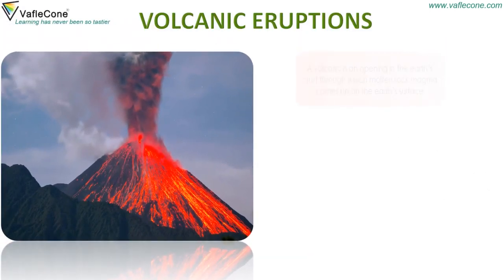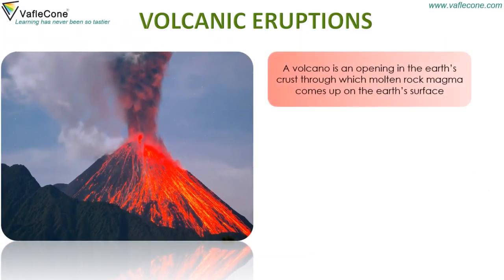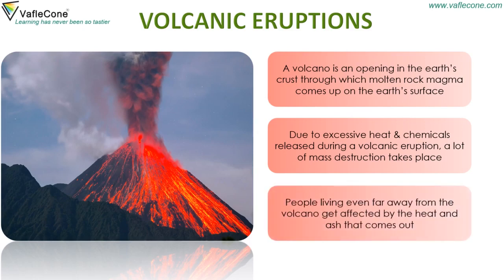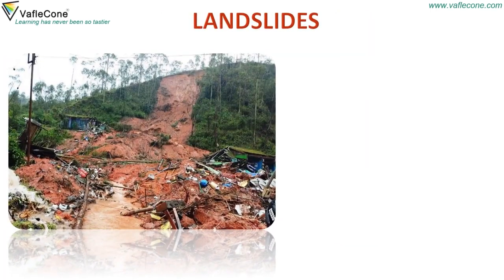Volcanic eruptions. A volcano is an opening of the earth's crust through which molten rock, magma, comes up on the earth's surface. Due to excessive heat and chemicals released during a volcanic eruption, a lot of mass destruction takes place. People living even far away from the volcano get affected by the heat and ash that comes out.